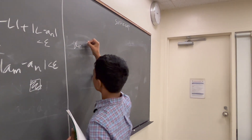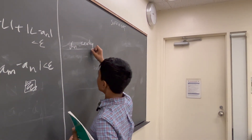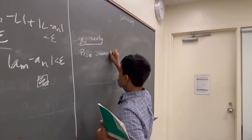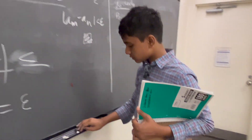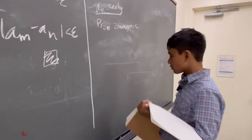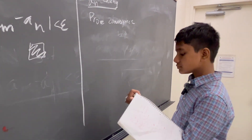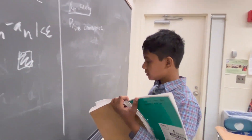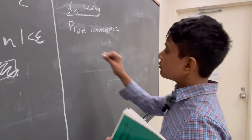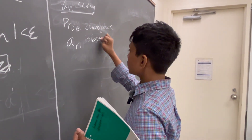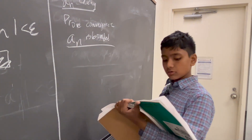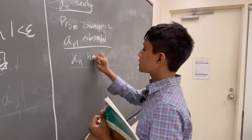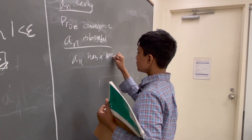Suppose a_n is Cauchy; prove that it converges. We already know a_n is bounded by that lemma we proved earlier. So, by the Bolzano–Weierstrass theorem that we learned, a_n has a convergent subsequence, since it's bounded.